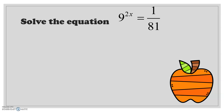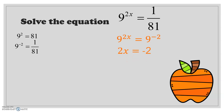This next one is a little more involved because we have 1 over 81. The equation is 9 to the power of 2x is equal to 1 over 81. First, I identify how to rewrite this. I know 9 squared is equal to 81, and remembering our negative indices: 9 to the power of negative 2 is 1 over 81. So I rewrite it as 9 to the power of 2x is equal to 9 to the power of negative 2. Now that the bases are the same, I set the exponents equal: 2x is equal to negative 2. Therefore x is equal to negative 2 divided by 2, which gives x is equal to negative 1.